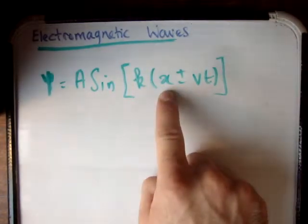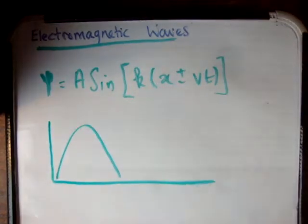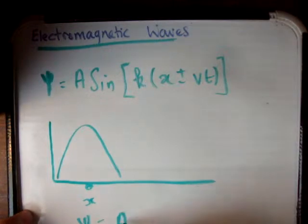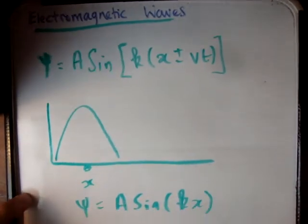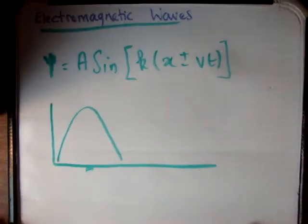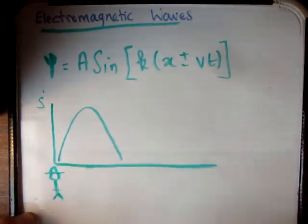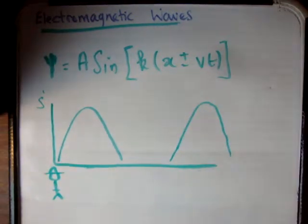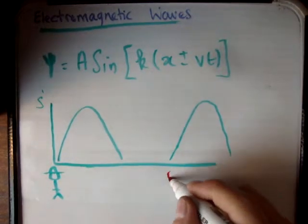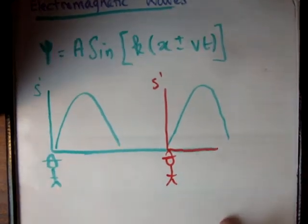Our wave equation is a function of position and time. If you have a stationary wave at position x, then psi equals A times the sine of kx. But what if it's moving? How do we work out where it is? Say you're standing at one particular point in a frame of reference called S, and there's a person standing there. The wave then moves away.